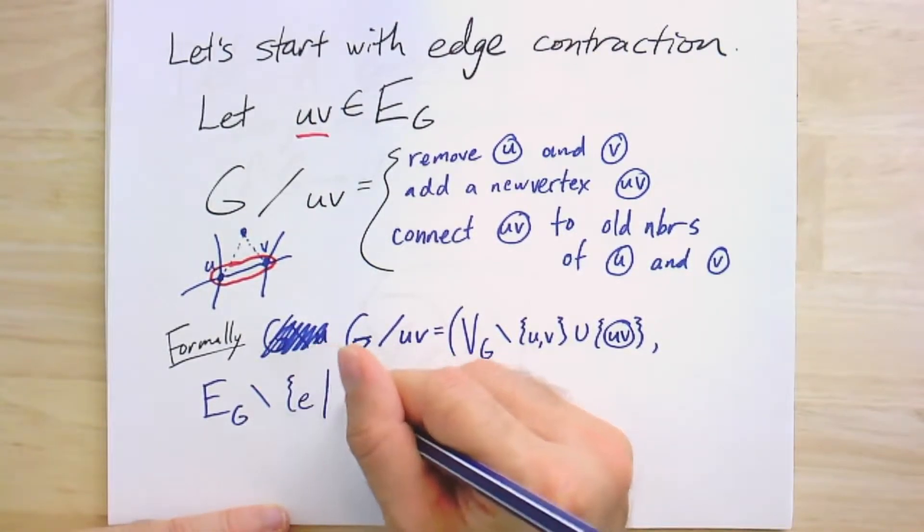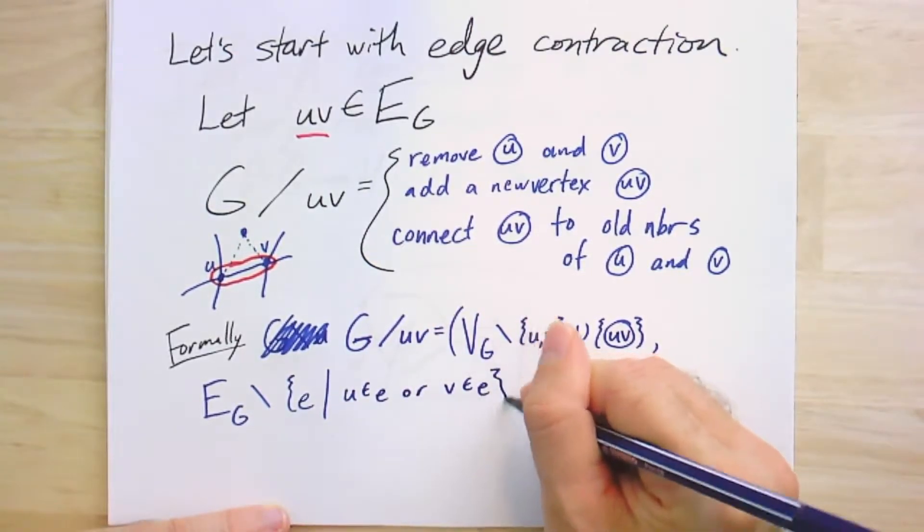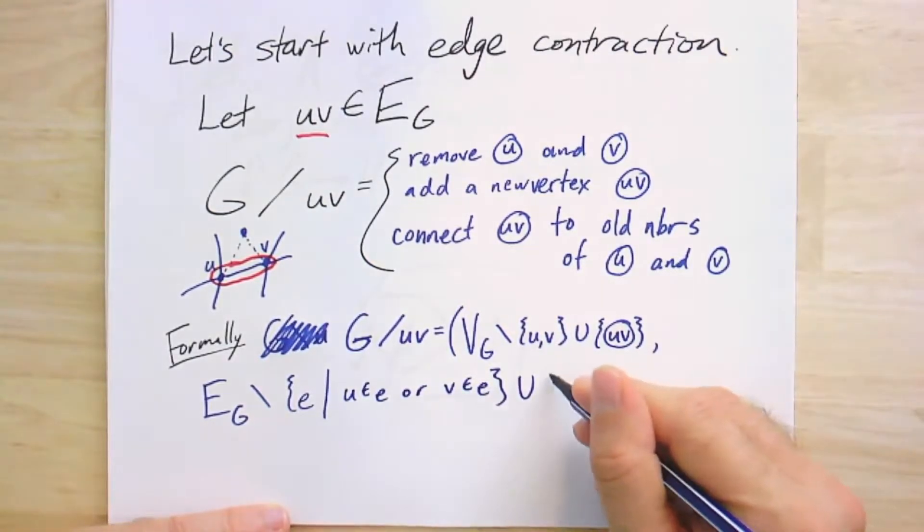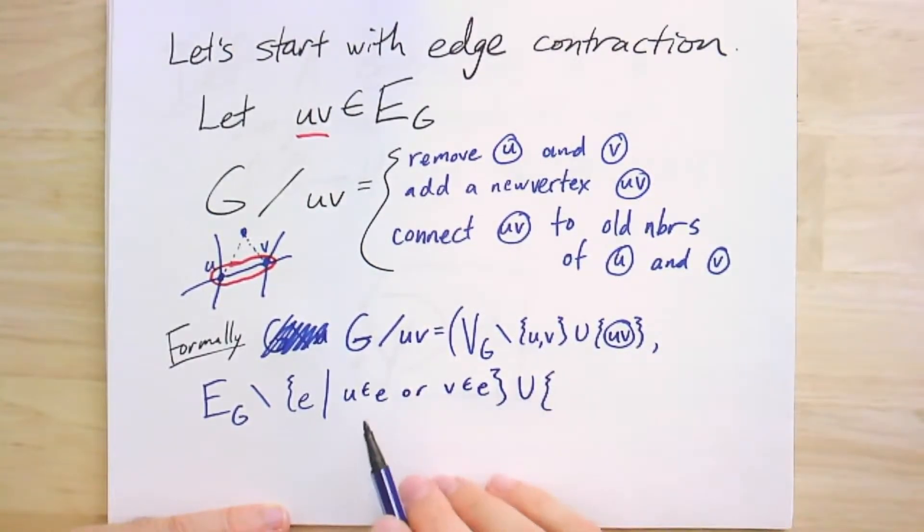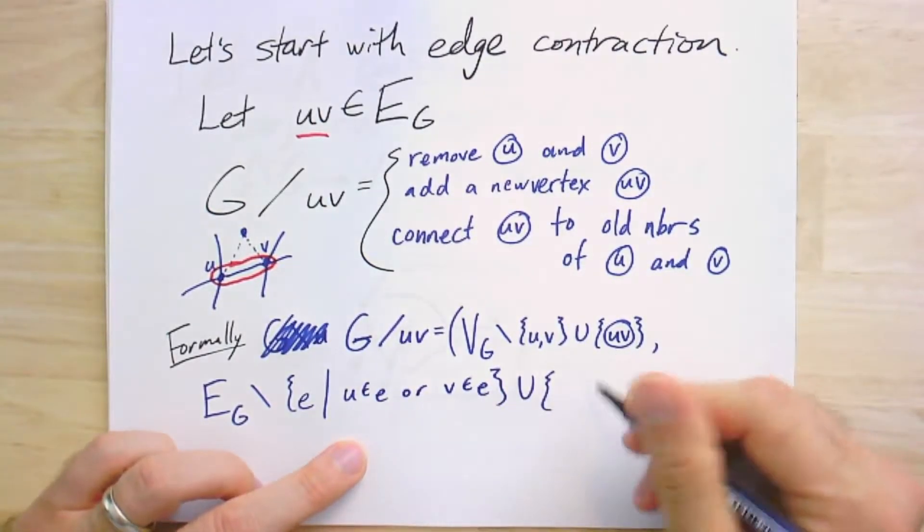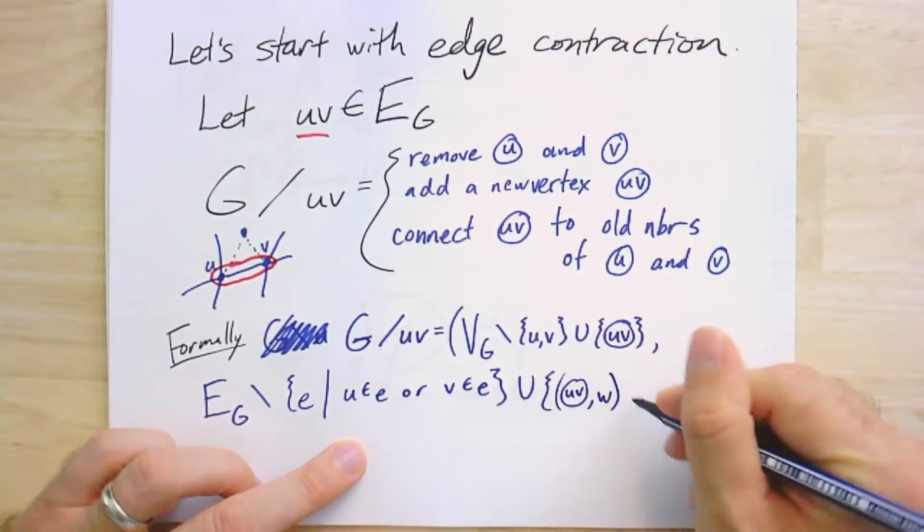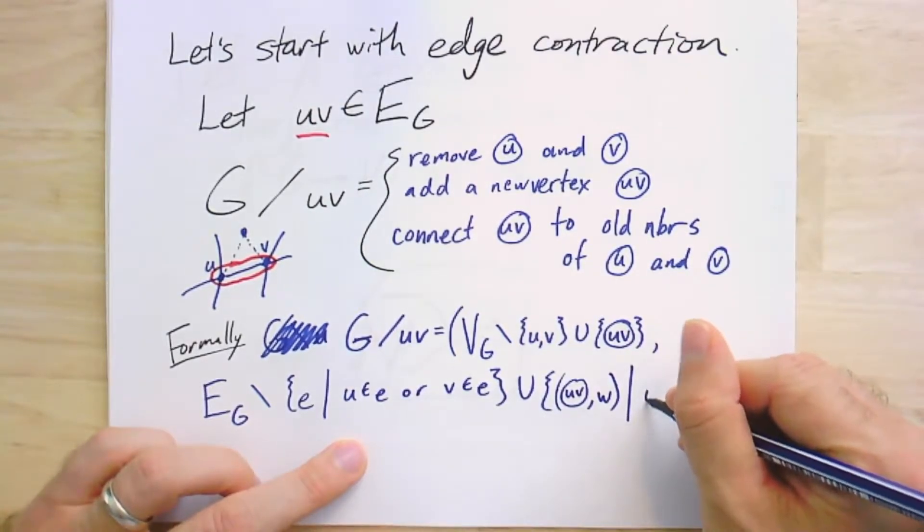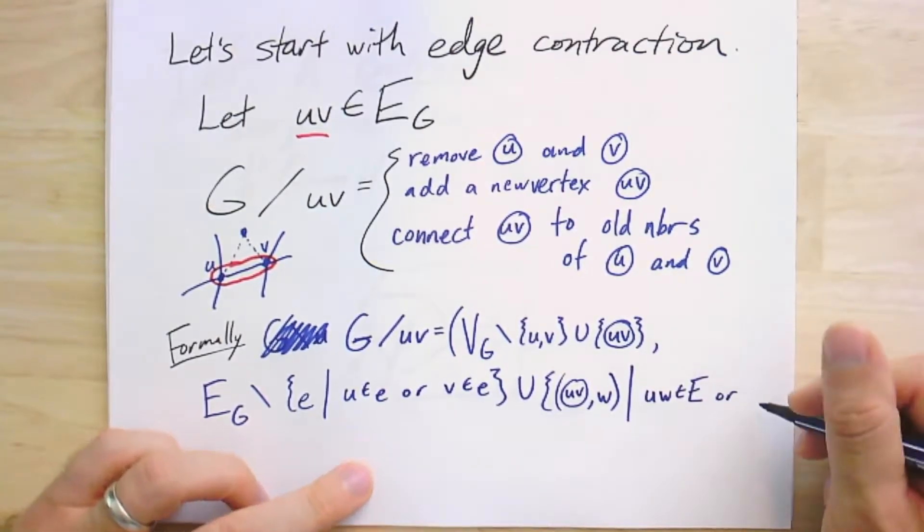And then I add in edges that go from U or V, that is edges that used to go to U or V, I'm going to add them to this new vertex here. So I'm going to have like UV comma W for all UW and E or VW in E.